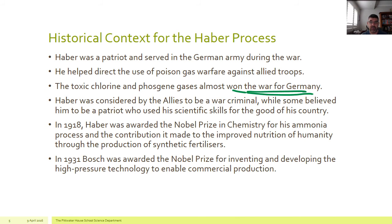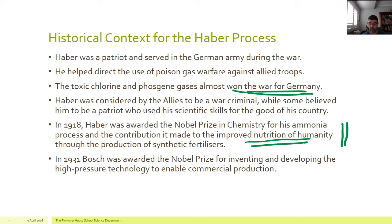By the same token, others recognised that he was trying to do the best for his country. He was very patriotic and his scientific skills benefited not only Germany but the whole world. In 1918, when the war was coming to its end, Haber was awarded the Nobel Prize in Chemistry. The process of ammonia production contributed to fertilizers helping feed the growing human population — one of the main reasons for the prize. Bosch himself was later also awarded a Nobel Prize for developing high-pressure technology for commercial production, so this one process led directly or indirectly to two Nobel Prizes.